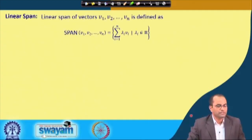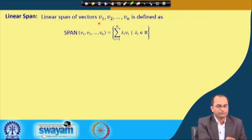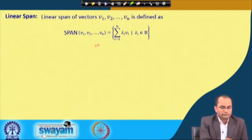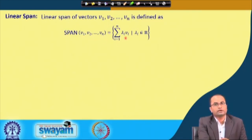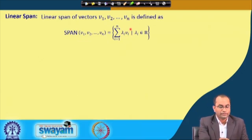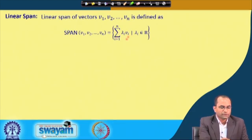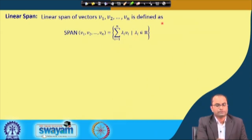What is the linear span? The linear span of given vectors v₁, v₂, v₃, …, vₙ is defined as — and we usually denote it as span(v₁, v₂, …, vₙ) — the set of all linear combinations of these vectors: λ₁v₁ + λ₂v₂ + … + λₙvₙ, where each λ belongs to the set of real numbers.